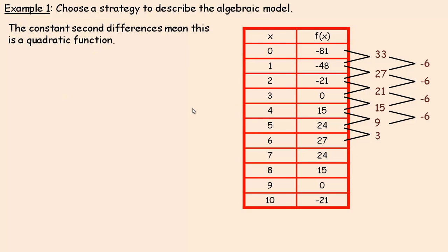We're going to focus on two different quadratic models. We'll do vertex form on this page, then intercept or factored form on the next page. They have different usefulness depending on what data you're given. I'm going to choose to do vertex form first — vertex form looks like this: f(x) = a(x - h)² + k.